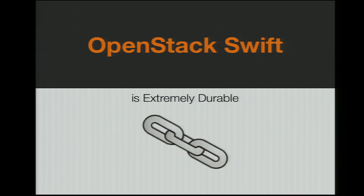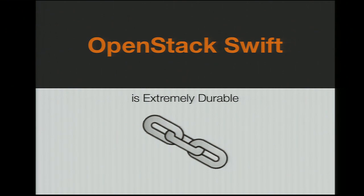Swift is also extremely durable. We use three full replicas of all of your data, and Swift is smart enough to know about the layout of your actual infrastructure and optimizes data placement so that each replica is in a distinct availability zone. Or if it can't choose distinct availability zones, it will choose different servers and different hard drives. This guarantees you will not have data loss even in the case of major hardware failures losing entire racks or even data center rooms.